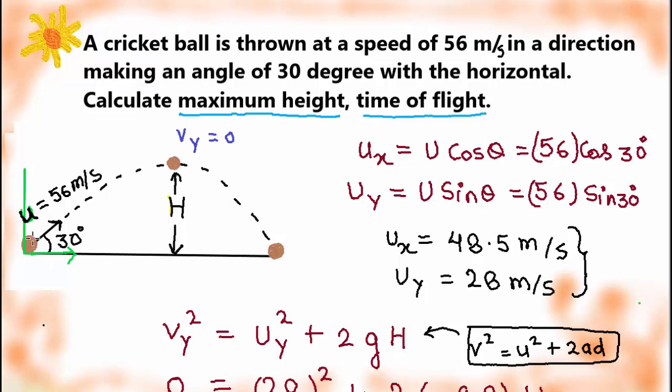So here is the cricket ball. When it is thrown at 30 degree, this vector is the velocity vector. Initial velocity vector or starting velocity vector which is U. And the value of velocity vector is 56 meter per second. Ball is projected at 30 degree so it will acquire or go in a projectile path like this. At the top of this path, height of the ball will be the maximum height. This height.